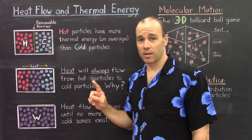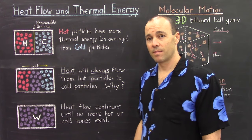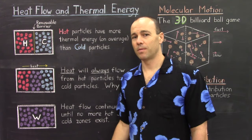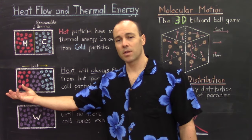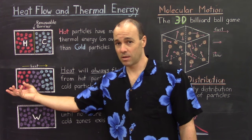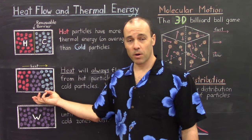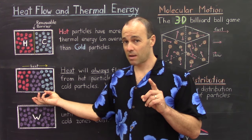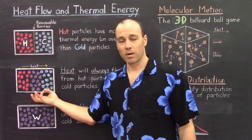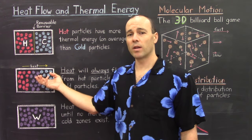That's a pretty important point, and we need to understand why that is. The answer is actually pretty simple. These hot particles have more molecular motion, and when they begin to bump into the cold particles — because the barrier has now been removed — they simply bump into the cold particles and cause those cold particles to jostle around a little bit more quickly.